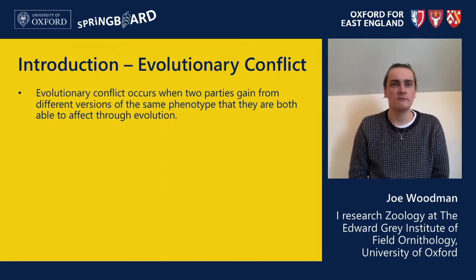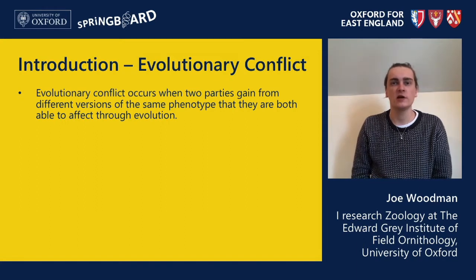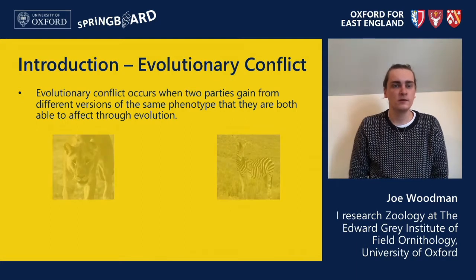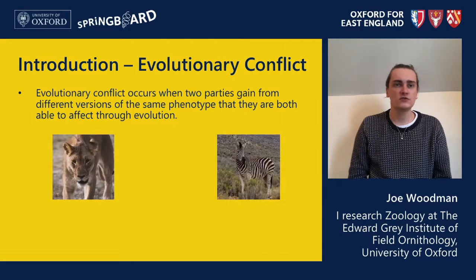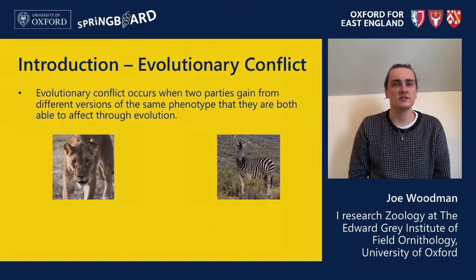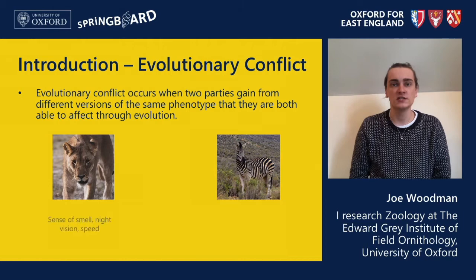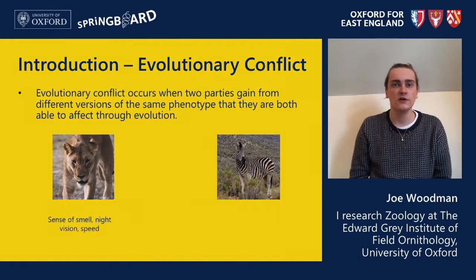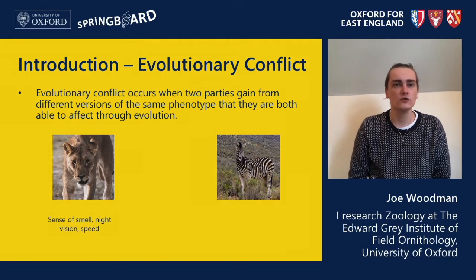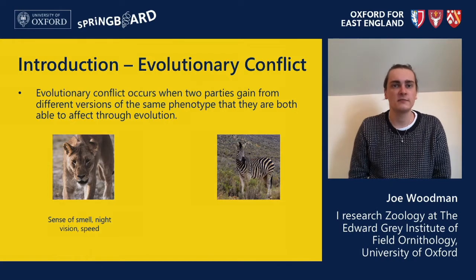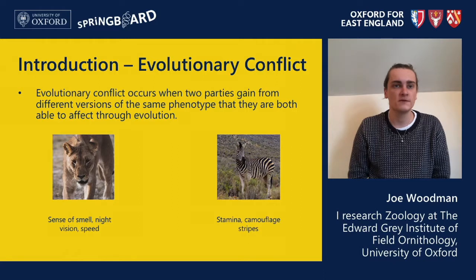This may sound confusing but you will have come across this concept when learning about natural selection. Take this interaction between a lion predator and its zebra prey. Natural selection theory teaches us that lions have evolved features to increase their ability to prey on zebras, such as acute sense of smell, night vision, and the ability to put on high bursts of speed. In contrast, zebras have evolved adaptations to help them avoid predators, such as stamina and their stripes.